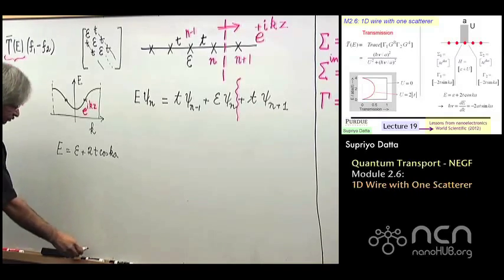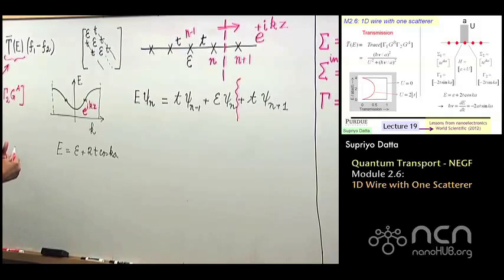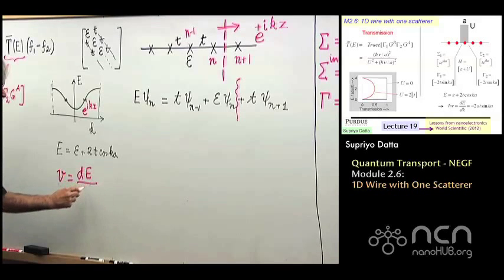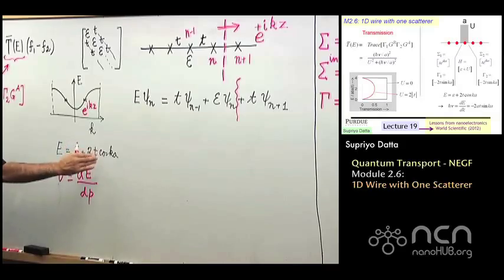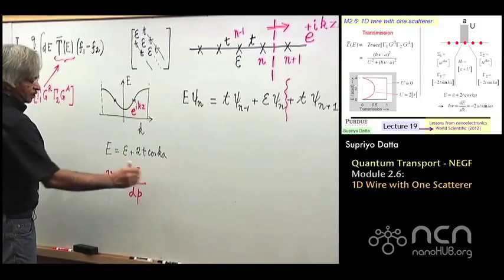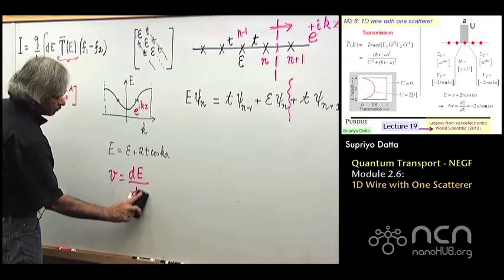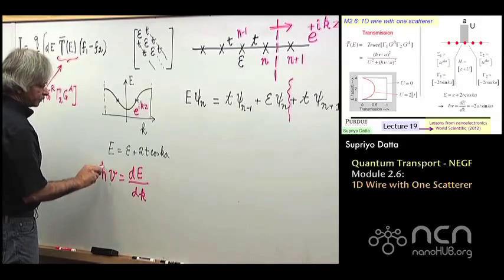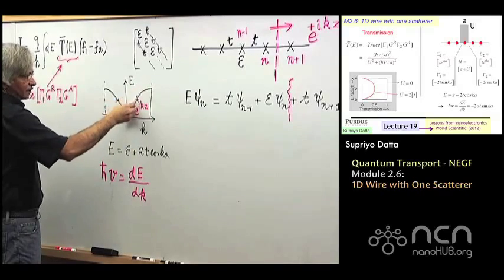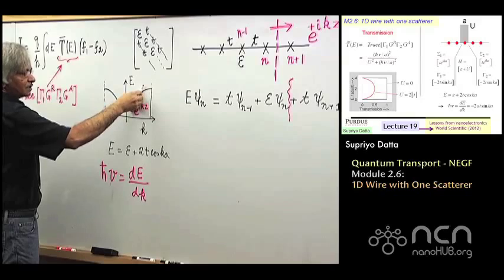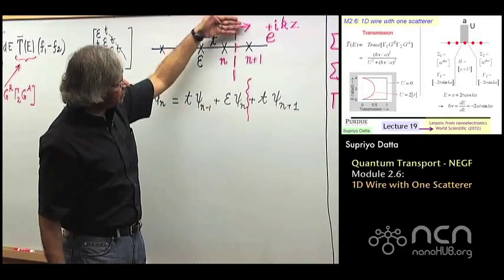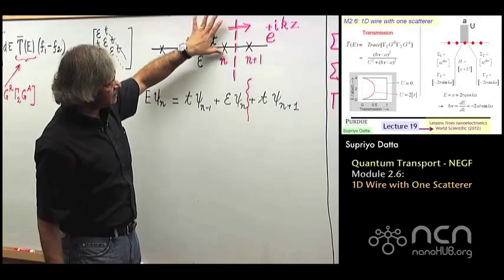Velocity is dE/dP, and since momentum equals h-bar k, you can write velocity as (1/h-bar) dE/dk. Around the bottom of the band, dE/dk is positive, so these are the states carrying current in the positive z direction. We assume the electron is going out into the contact and nothing is coming back.